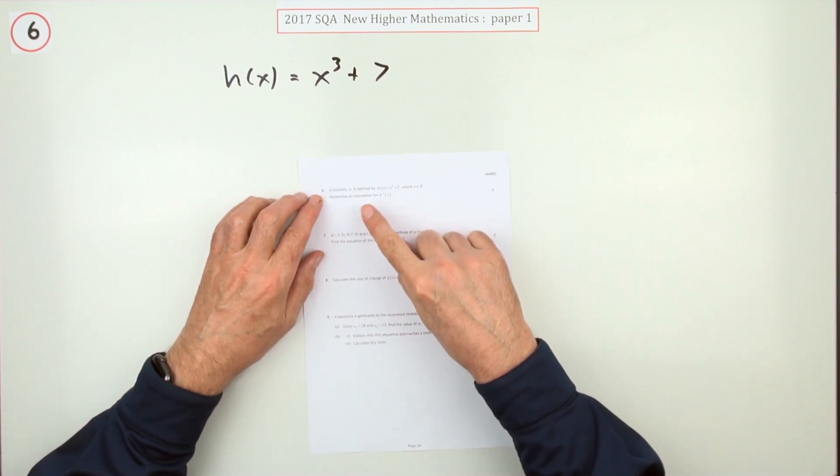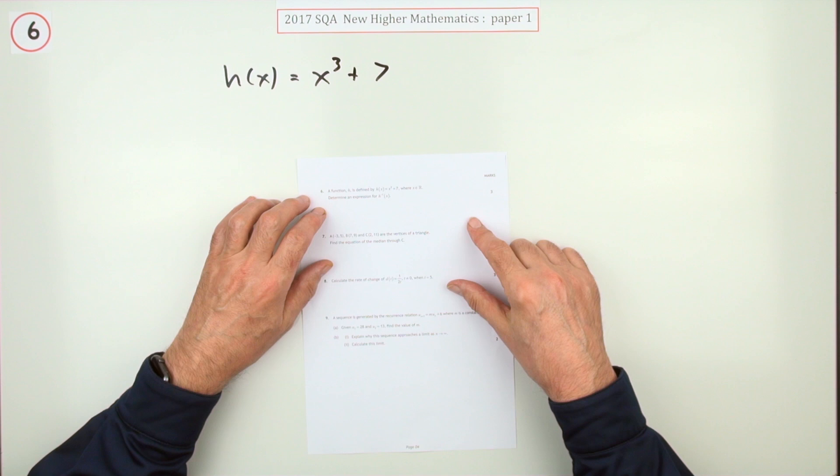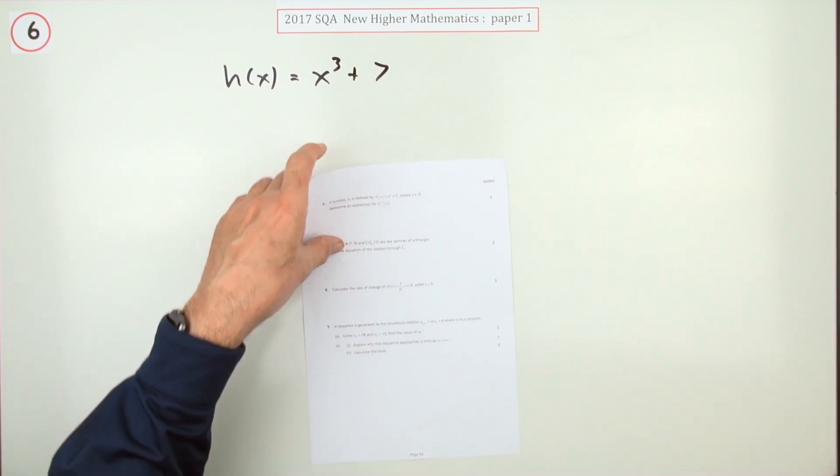So for number 6, three marks here. A function is given by this x cubed plus 7. What's the inverse function?